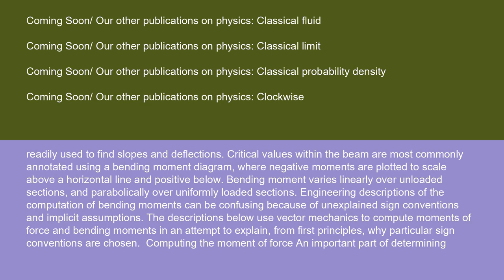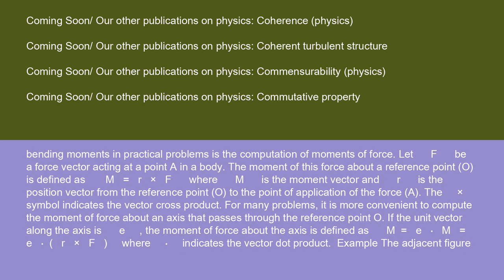Engineering descriptions of the computation of bending moments can be confusing because of unexplained sign conventions and implicit assumptions. The descriptions below use vector mechanics to compute moments of force and bending moments in an attempt to explain, from first principles, why particular sign conventions are chosen. Computing the moment of force is an important part of determining bending moments in practical problems. Let F be a force vector acting at a point A in a body. The moment of this force about a reference point O is defined as M = r × F where M is the moment vector and r is the position vector from the reference point O to the point of application of the force A. The times symbol indicates the vector cross product.